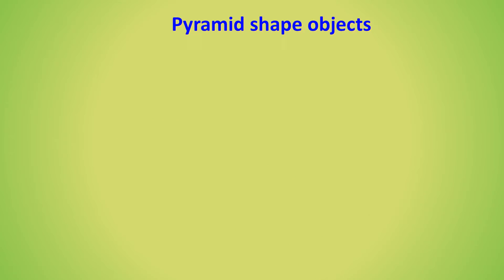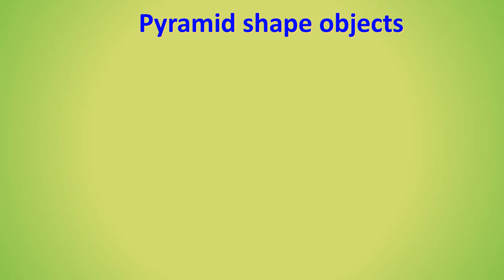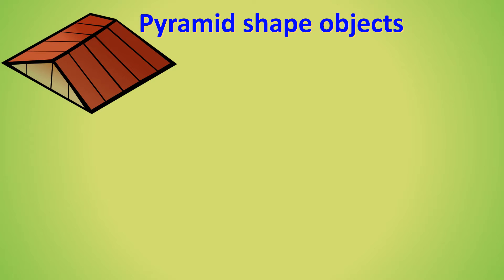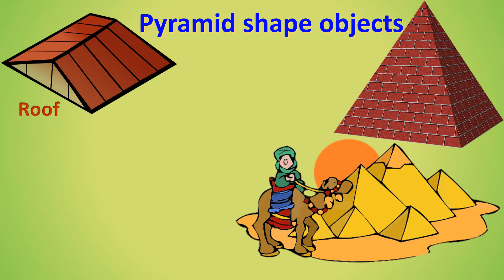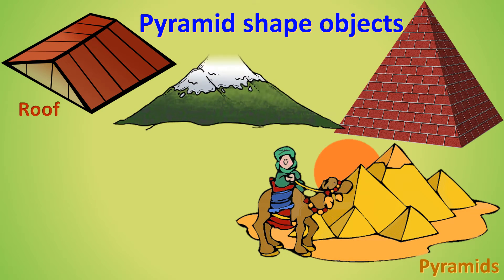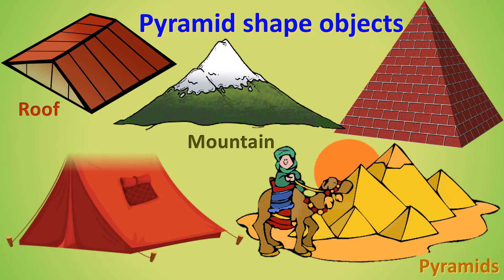Pyramid-shaped objects: Roof, pyramids in Egypt, mountains, tent. All these are pyramid-shaped objects.